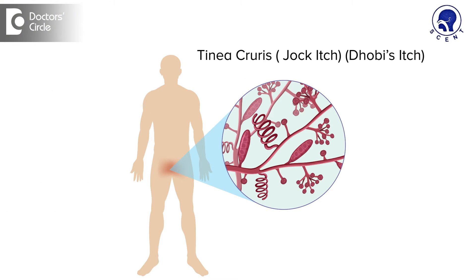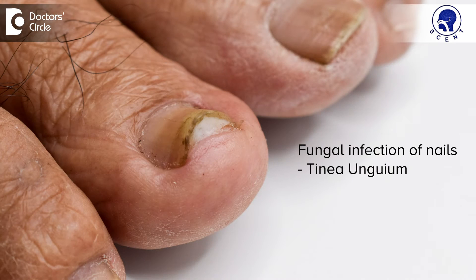Hands — tinea manum; feet — tinea pedis. When it occurs in the groins, it is called tinea cruris or jock itch. And sometimes the nails can also be affected, when it is called tinea unguium.